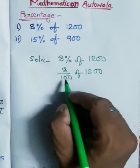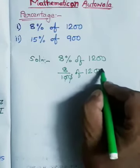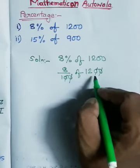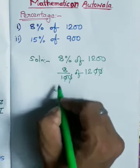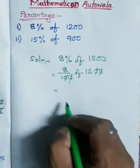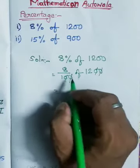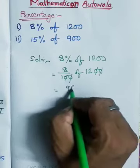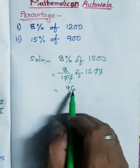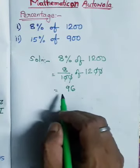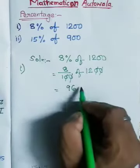So you can see here 100, 10, 10, here 10, 10 is cancelled. So 8 into 12 is equal to, so 8% of 1200 is equal to 96. This one is the first number answer.